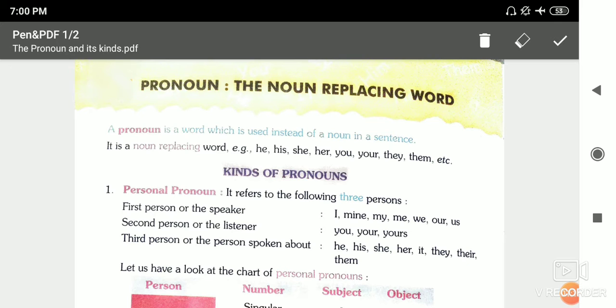Kinds of pronoun. The first kind is personal pronoun. Personal pronoun refers to the following three persons. The first person means the speaker - I am the speaker, I am speaking.